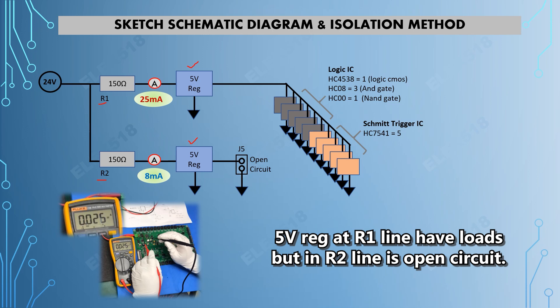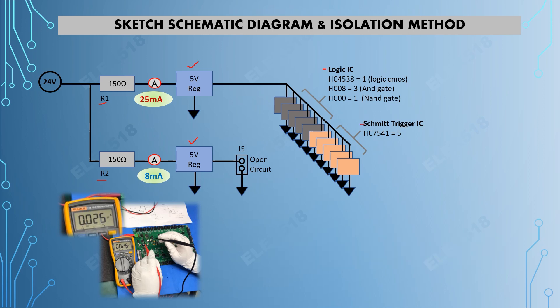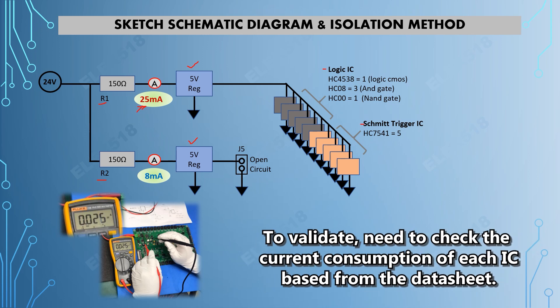But in order to validate this 25 milliamp reading, I need to check the datasheet of these ICs—the logic IC and Schmitt trigger ICs—to check the current consumption and validate if 25 milliamp is normal.